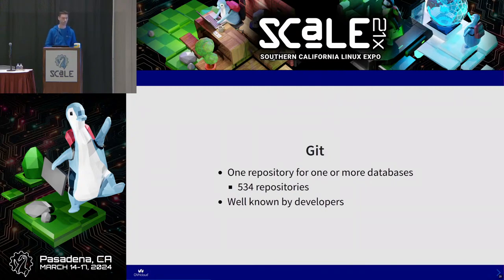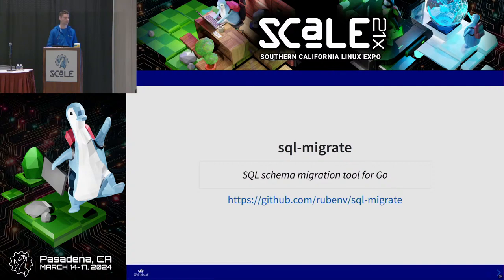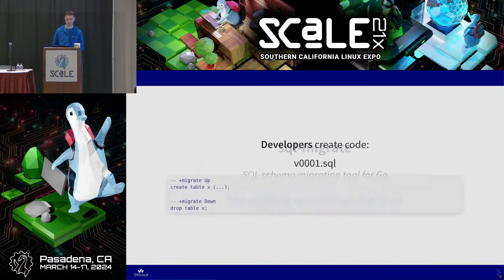We have 534 repositories today. To apply those migrations, we decided to use SQL Migrate, which is a schema migration tool for Go. But there is a CLI we can use, and it's open source.